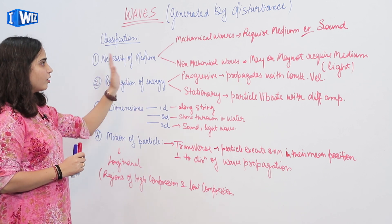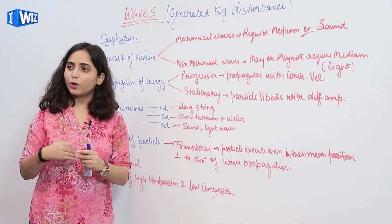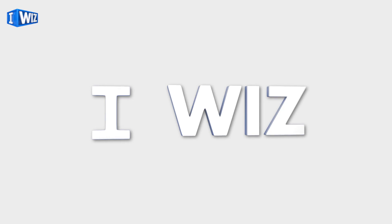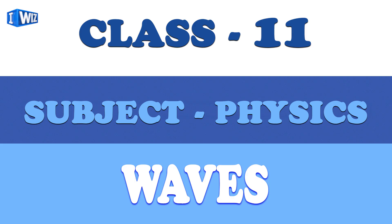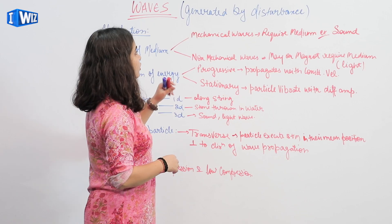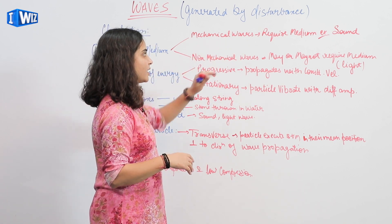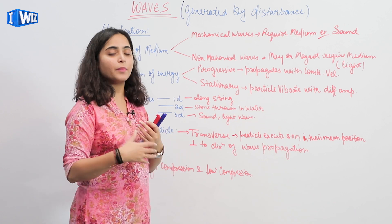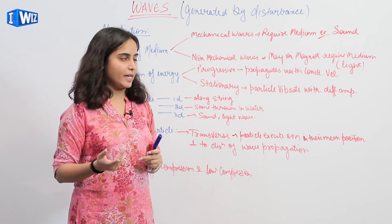First, we have the necessity of medium. Once a wave is generated, does it require a medium to propagate and move forward? Those waves which require a medium are called mechanical waves — example: sound. And those which may or may not require a medium are called non-mechanical waves — example: light.